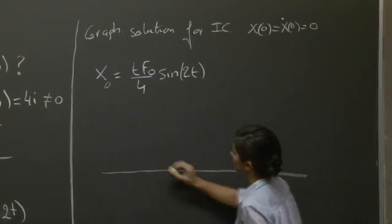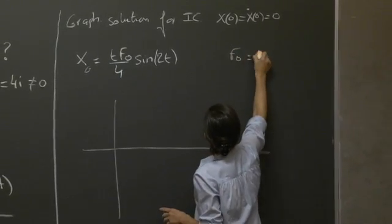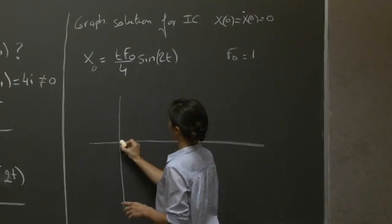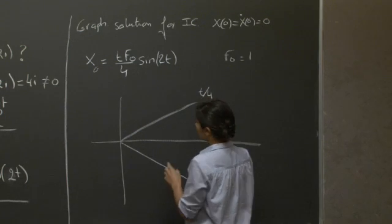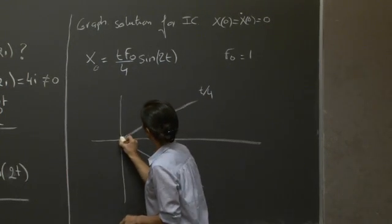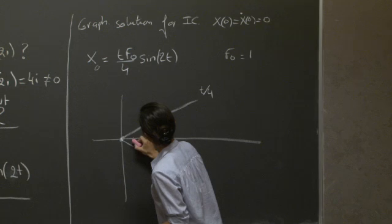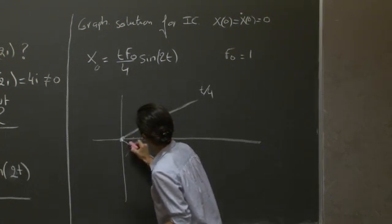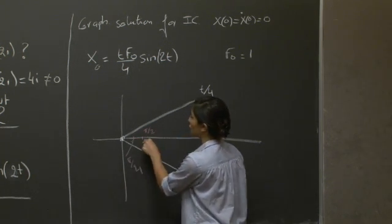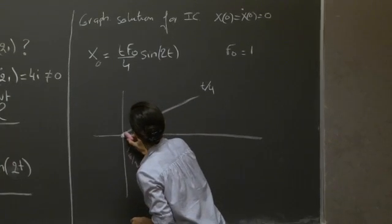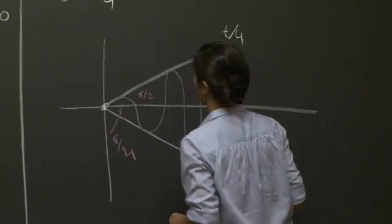And to sketch this, we can draw, so here if I just pick f0 equal to 1, I'm just going to do t over 4 for the envelopes. At t equals 0, we start with 0. And we know that we're going to have the first extrema at pi over 4 and the first 0 at pi over 2. And so basically, we end up with something like that.